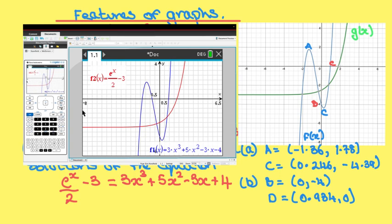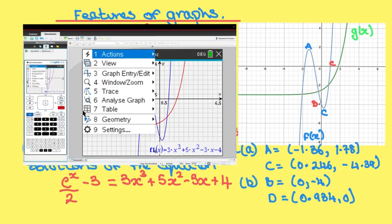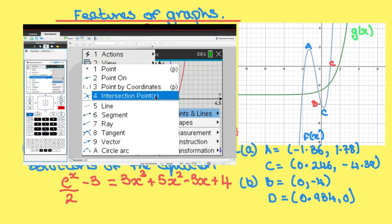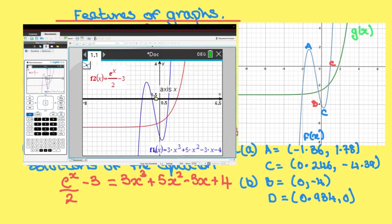I could find them individually but there is a trick where you can find them all in one go. So if you go to menu, if you go to geometry, if you go to points and lines, and then intersection points. You now have to tell them which two graphs you want to find the intersection points. It doesn't matter which order you tap them in. So tap the first graph, then tap the second graph and there you can see.